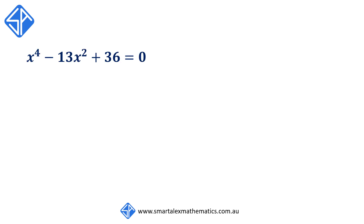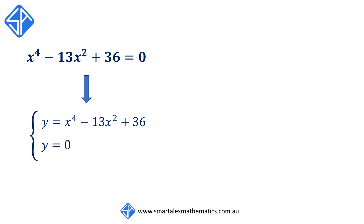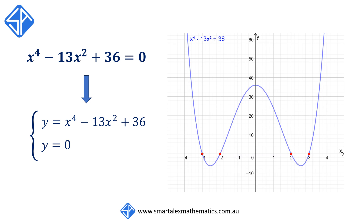Why do we get four solutions? Any time you solve an equation like this, you're essentially solving simultaneous equations. For this example, we are solving simultaneously y equals x to the 4 minus 13x squared plus 36 and the line y equals 0, which is the x-axis. The quartic graph intersects the x-axis at four locations: minus 3, minus 2, 2, and 3. Since there are four points of intersection, there are four solutions corresponding to x equals plus or minus 2 and x equals plus or minus 3.